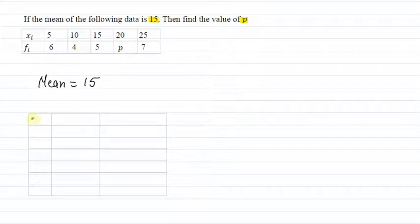Here we have table with xi and fi. Xi has 5, 10, 15, 20, 25. And fi we have 6, 4, 5, P and 7.